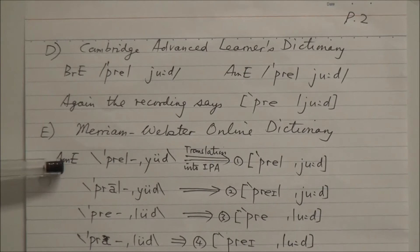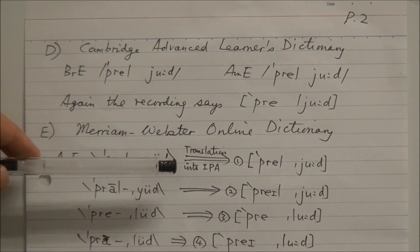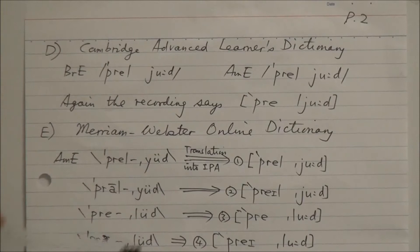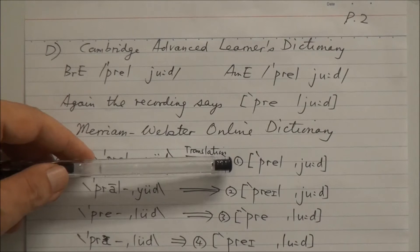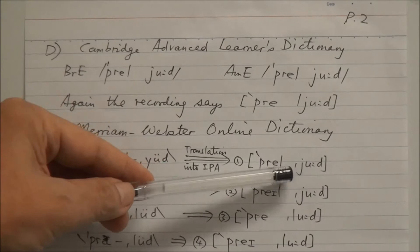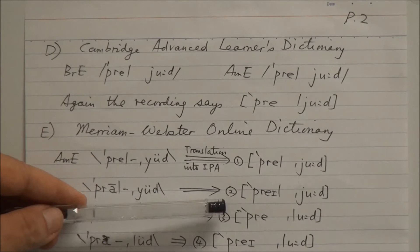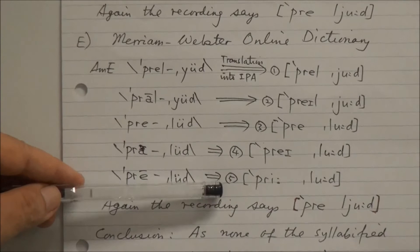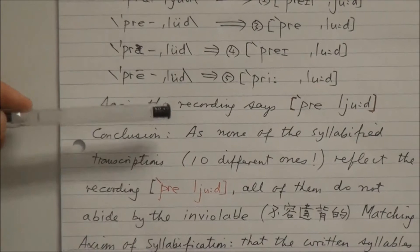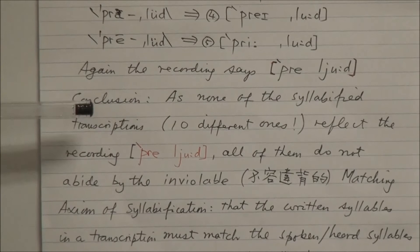Merriam-Webster Online Dictionary uses American English transcriptions that are different from the letters of the International Phonetic Alphabet. When translated into IPA, they yield five different transcriptions — numbered one through five. Of course, all of them differ from the actual recording.